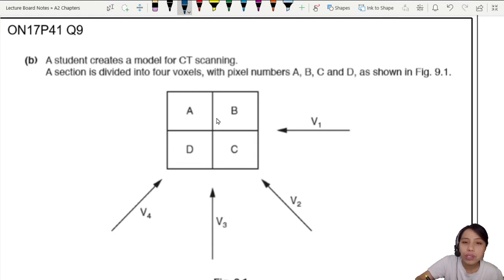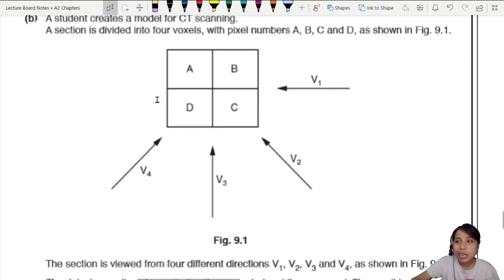A student creates a model for CT scanning. The section is divided into four voxels, four boxes. And the pixel numbers, we don't know, we just call them ABCD. So we have to be the computer and figure out what is ABCD.